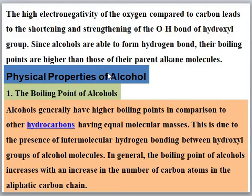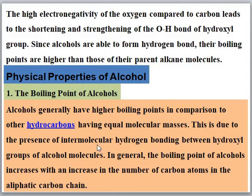The first physical property is the boiling point of alcohols. Alcohols generally have a high boiling point in comparison with other hydrocarbons or their parent alkanes of equal molecular mass. This is due to the presence of strong intermolecular forces, i.e., hydrogen bonding between the hydroxyl groups of alcohol molecules. In general, the boiling point of alcohols increases with an increase in the number of carbon atoms in the aliphatic chain; higher alcohols have higher boiling points than lower alcohols.